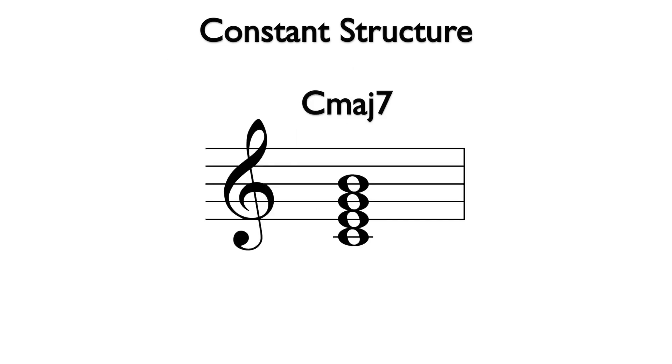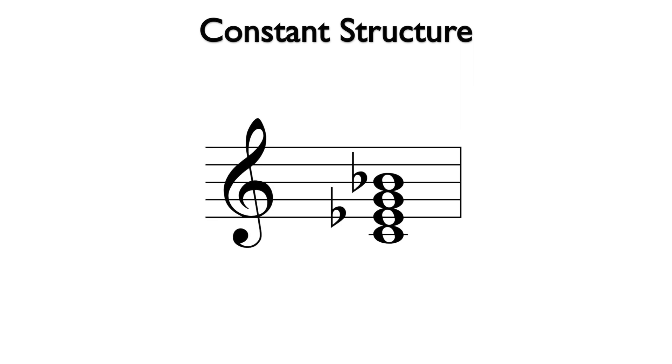Here is a C major 7th chord, a major triad with an added major 7th interval from the root. Here is a C minor 7th chord, a minor triad with an added minor 7th interval from the root.